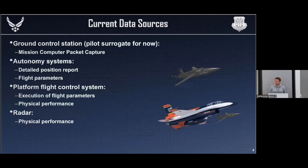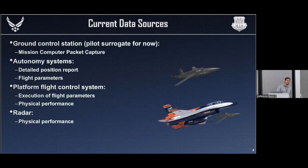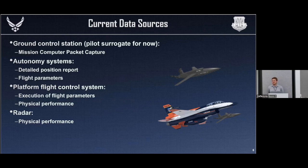The Skyborg information I am working with comes from several different data sources: the planned event, the actual recorded data from the host platform or plane — whether that would be telemetry, altitude, latitude, all the good '-tudes' — the AI system and what it believes it's doing, which is really important because sometimes it thinks it's doing something correctly and it's not, but that's good to know regardless. And then the physical performance data from radar and all the other sensors out in the field to give us a real good idea of where, what, and how the platform is performing in a test environment.